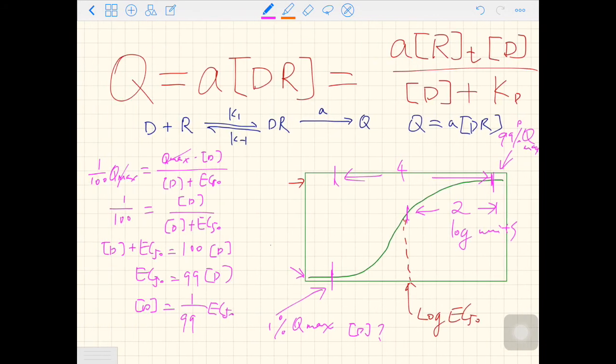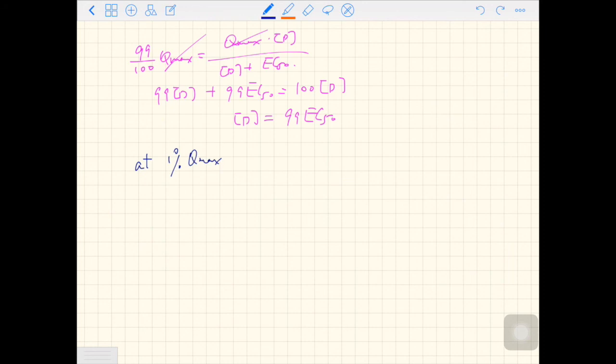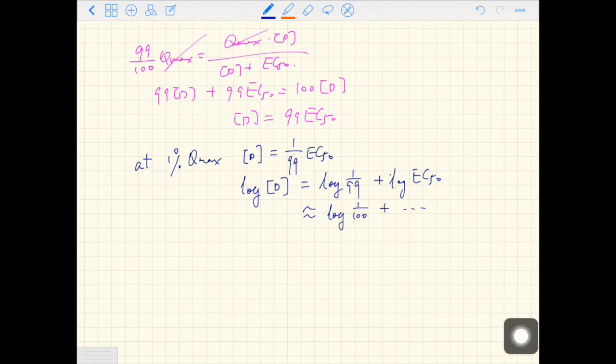So what we had before is D equals 1 over 99 EC50. So log D equals log 1 over 99 plus log EC50. It's approximately log 1 over 100 plus blah blah. It's negative 2 plus log EC50. So at 1% Q max, log D equals log EC50 minus 2.